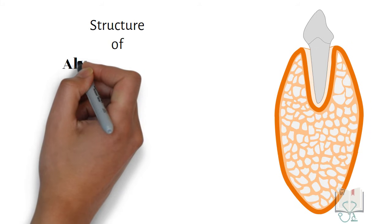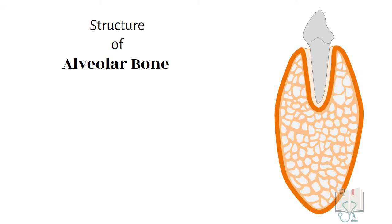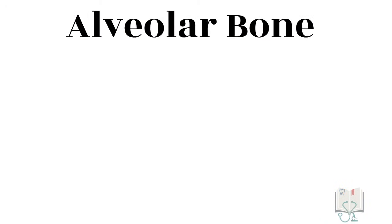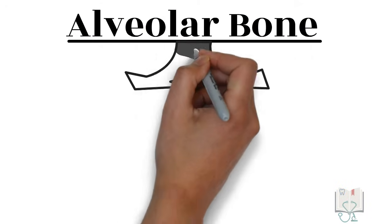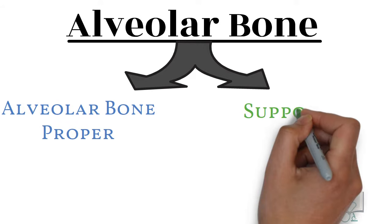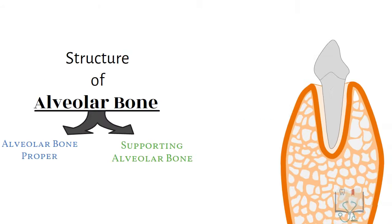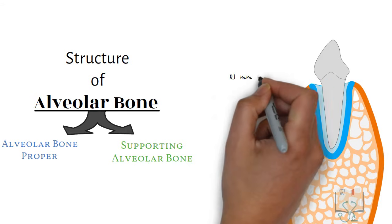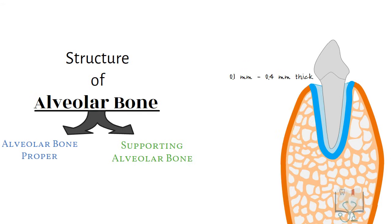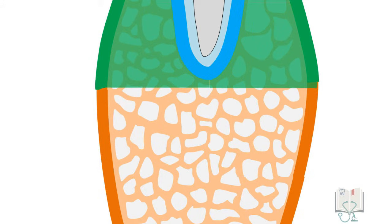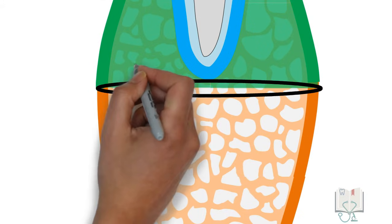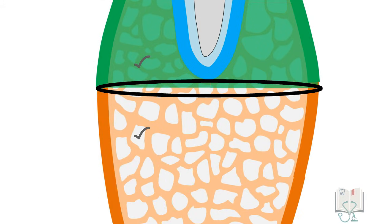Now let us study the structure of alveolar bone in detail. On the basis of function, alveolar bone can be distinguished into two parts: alveolar bone proper and supporting alveolar bone. Alveolar bone proper is the part which forms the socket of the tooth and is about 0.1 to 0.4 millimeters thick. The supporting alveolar bone forms the structure around the alveolar bone proper and supports the socket of the tooth. There is no clear-cut demarcation between supporting alveolar bone and the body of maxilla or mandible.